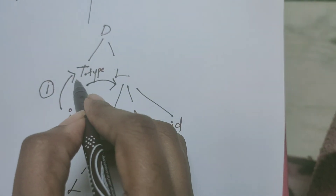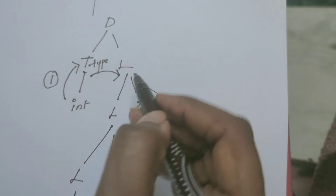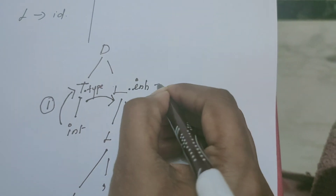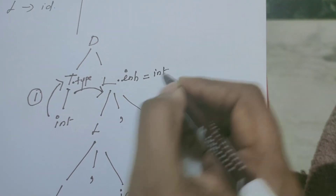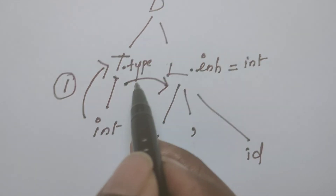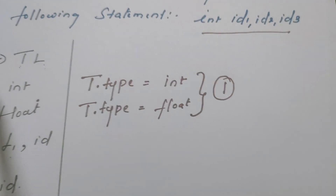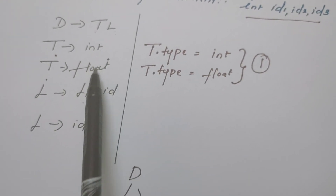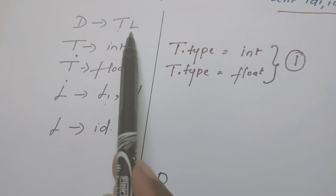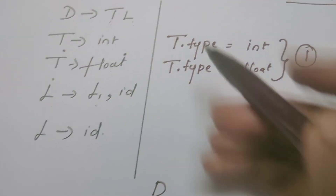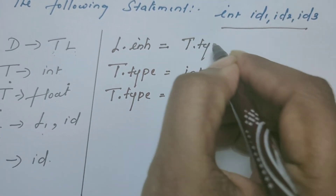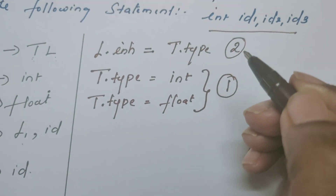From the T node, the value is passed to its sibling L, since D derives TL. Because it is an inherited attribute, I call it INH — L.INH takes a value from T.type. This is the second operation in the annotated parse tree. The semantic rule for the production D → TL is: L.INH = T.type. This is the inherited attribute — since the value is sent from sibling T to L.